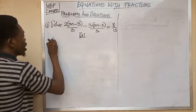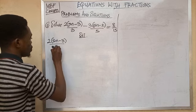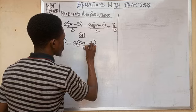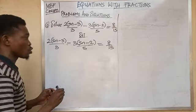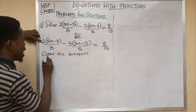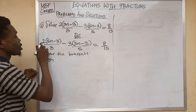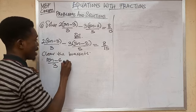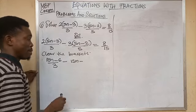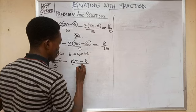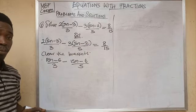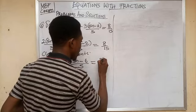Writing out the equation: 2 into (5n minus 3) over 3, minus 3 into (5n minus 2) over 5, equals 8 over 15. We now clear the brackets. 2 times 5n gives 10n, and 2 times minus 3 gives minus 6, all over 3. Then minus 3 times 5n gives minus 15n, and minus 3 times minus 2 gives plus 6, all over 5. Equals 8 over 15.